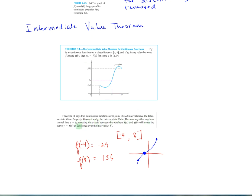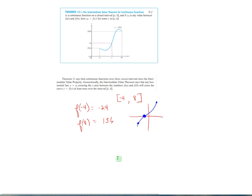Continuous functions over finite closed intervals have the intermediate value property. Geometrically, that says that any horizontal line y equals y sub 0 crossing the y axis between those numbers will cross the curve y equals f of x at least once. And so, on this one, from negative 4 to 8, if we did whatever the function was, say if we said f of negative 4 and you got negative 24, f of 8, 136.